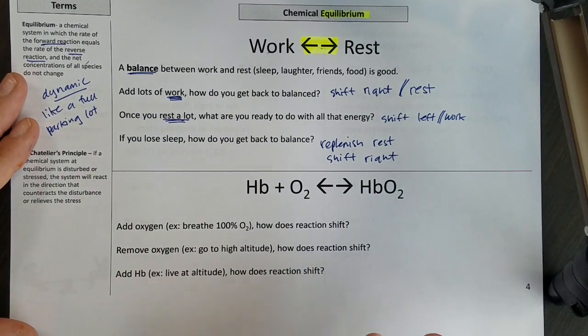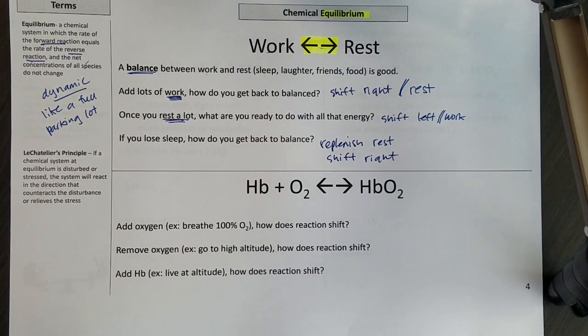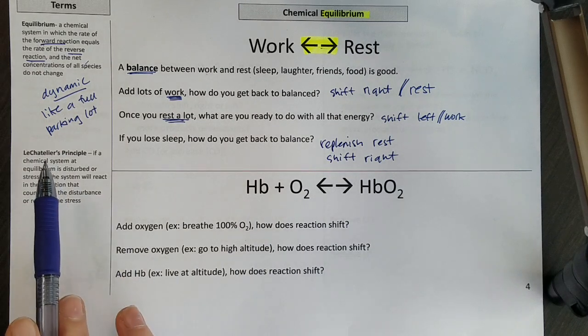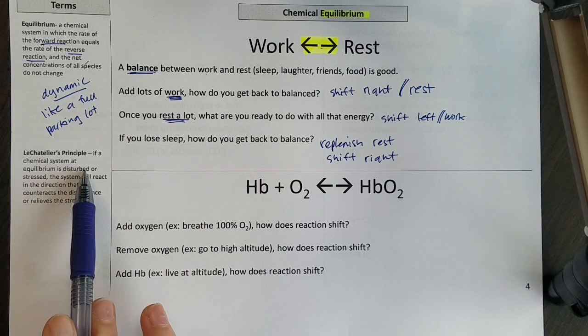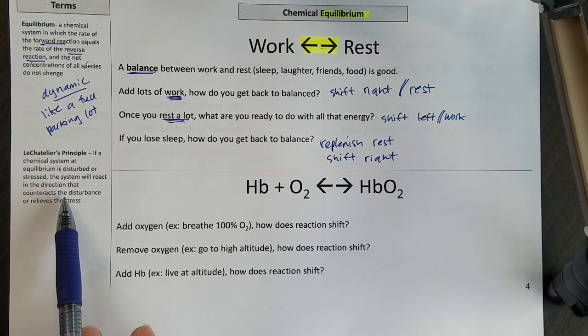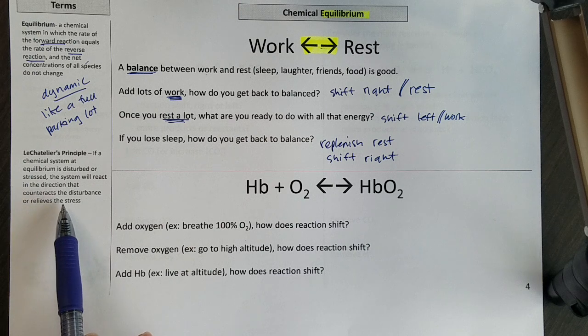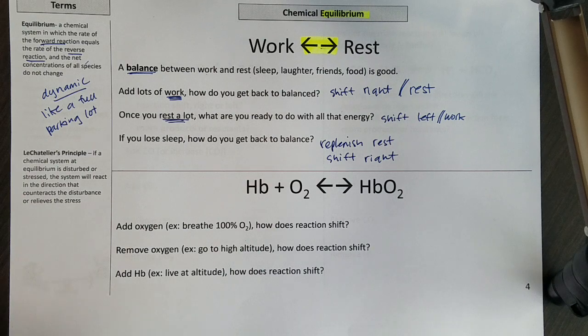In chemistry, we call this Le Chatelier's principle. If a chemical system at equilibrium is disturbed or stressed, the system will react in the direction that counteracts the disturbance or relieves the stress, which is just a wordy way of saying if you work a lot, you need to rest. And if you rest a lot, you're ready to work. So you adjust to whatever the conditions are.